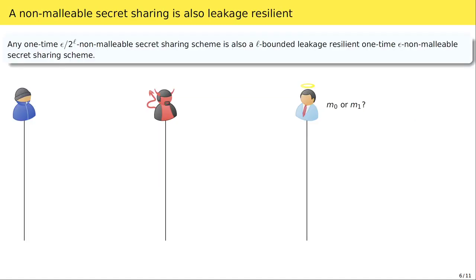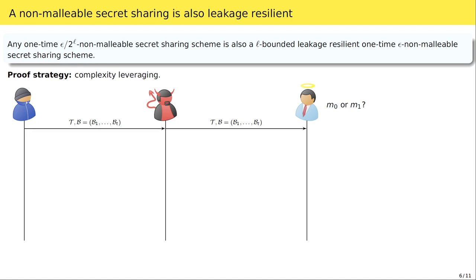In this setting, we prove that any one-time non-malleable secret sharing scheme is also L-bounded leakage-resilient. We proceed by complexity leveraging, constructing a reduction that tries to guess the leakage string. The reduction commits to the same reconstruction set and partition as the adversary. Upon receiving a leakage query, the reduction samples a random binary string of the expected output size and returns it to the adversary. For simplicity I consider one leakage query here, though with the same technique we prove security even with multiple leakage queries.